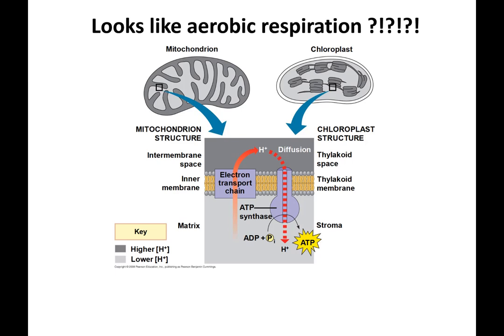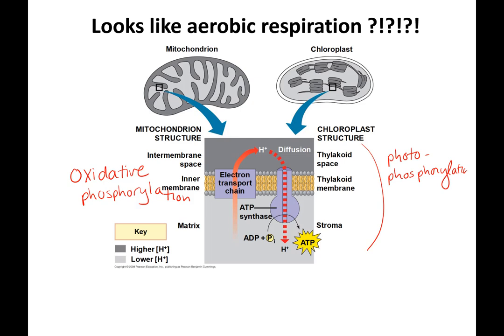This is the whole of the light reactions. This should look like aerobic respiration — that's why if you learn aerobic respiration first, photosynthesis is not so bad. We talked about mitochondria and electron transport chain and chemiosmosis making ATP by oxidative phosphorylation. The way ATP is made here is called photophosphorylation, because the energy to make the ATP is coming from light, whereas the energy to make ATP in the mitochondria comes from oxidative reactions.